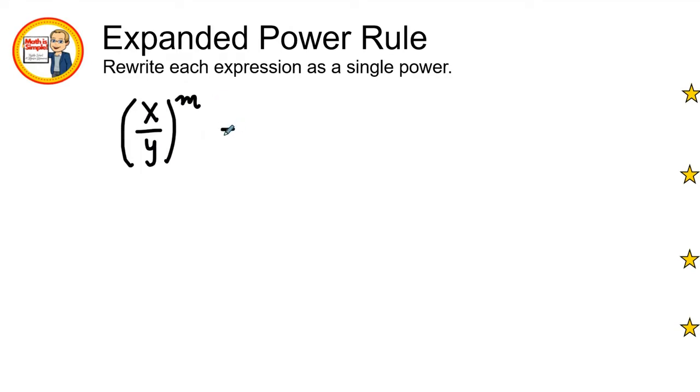So what the expanded rule is saying is that I can transfer or simplify this being x to the m over y to the m. This gives us - I am distributing whatever is on the outside of the parentheses.